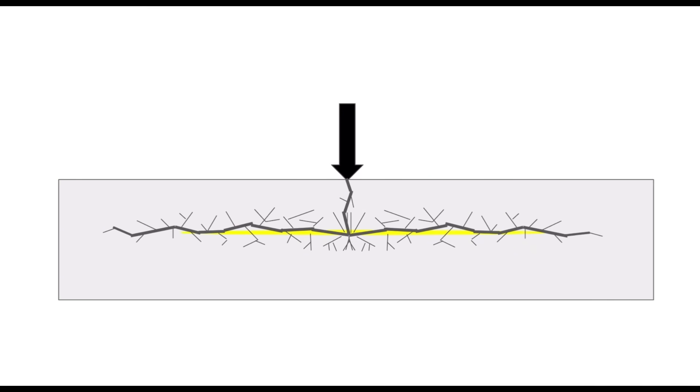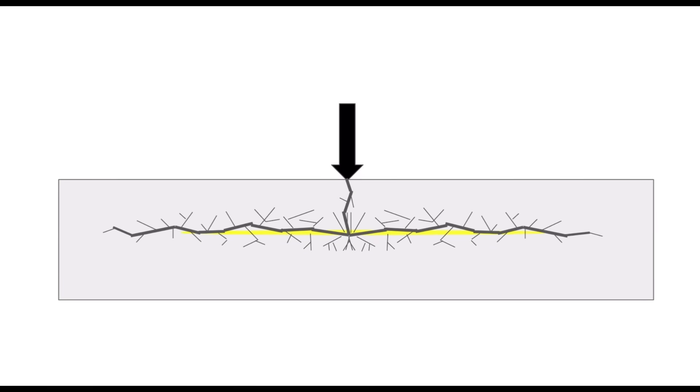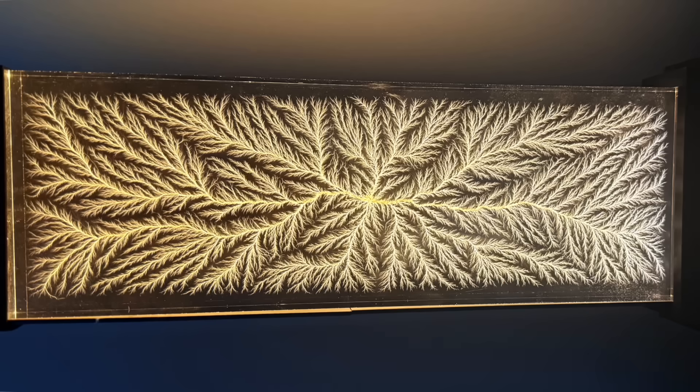The other thing that I want you to notice is that the Lichtenberg pattern does not go all the way to the edges of the acrylic. This is the product of the oddly shaped space charge that I talked about. The curved edges of the space charge resulted in insufficient charge for the dielectric breakdown process to propagate all the way to the edges of the acrylic.